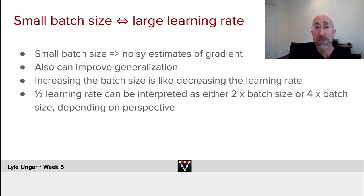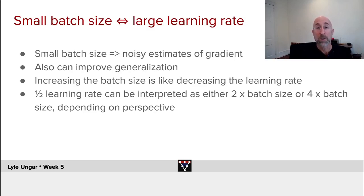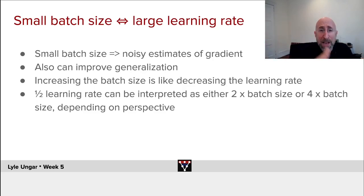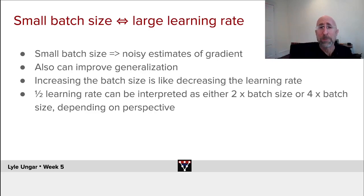There's something else you can adjust which has a very similar effect: batch size. A smaller batch size gives a noisier estimate of the gradient, bouncing you around more, which may improve generalization. A larger batch size does a better job of converging smoothly to a local optimum — perhaps too good. Increasing the batch size is like decreasing the learning rate. So you can adjust your regularization not just by L2 penalties but by taking larger steps or using smaller batch sizes.